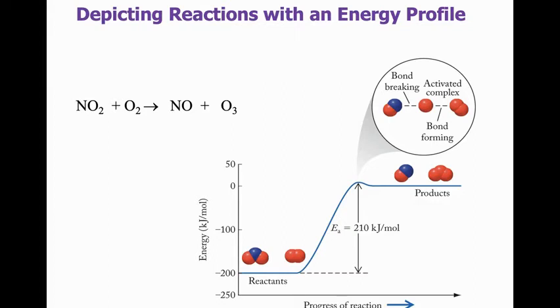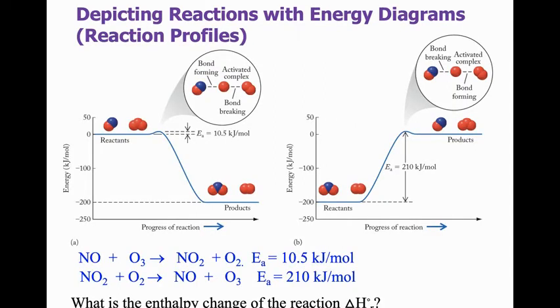So we can think of those reactions in the energy diagram together. So let me put them together for you, both pictures. So this is kind of our forward direction, 10.5 kilojoules per mole, and our exothermic direction, and then our endothermic direction is 210 kilojoules per mole. So looking at these two together, what is the enthalpy change of the reaction? What is the delta H? Couldn't we just subtract the two activation energies?